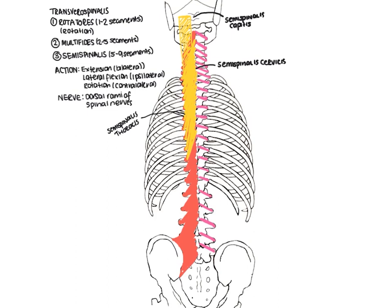To summarise, the transversospinalis group consists of three parts: the rotatoris, the multifidus, and the semispinalis. They generally start on the transverse processes — as their name suggests — and finish on the spinous processes of the regions they are associated with. Their main action is rotation, and they also act to extend. During rotatory movements they are the prime movers, and during extension or large movements of the vertebral column they tend to be the stabilisers.